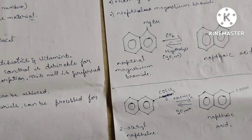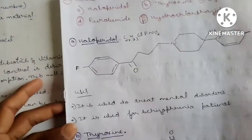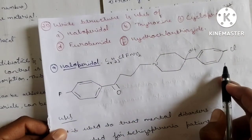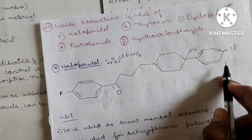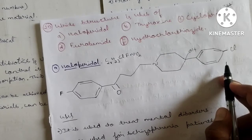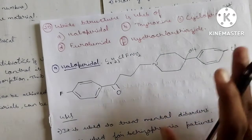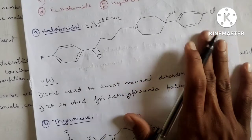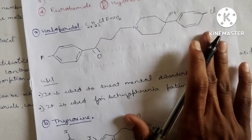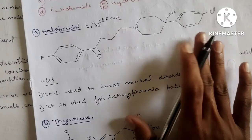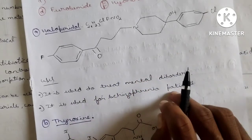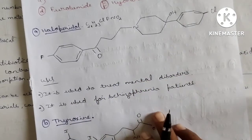Question 20: Haloperidol — go through the structure. Structures are very important; you will get 35 to 40 marks in Pharmaceutical Chemistry 2 based on structures alone. The structures uploaded in the booklet in the description are enough for the examination. Haloperidol is used to treat mental disorders and schizophrenia.